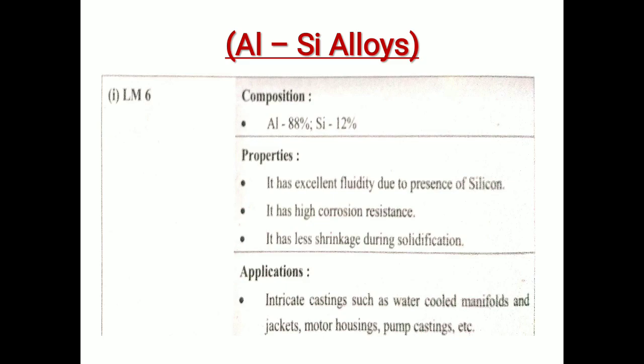Aluminium-silicon alloy LM6: the composition is aluminium 88% and silicon 12%. The properties of LM6 are high corrosion resistance, excellent fluidity due to the presence of silicon, and less shrinkage during solidification.